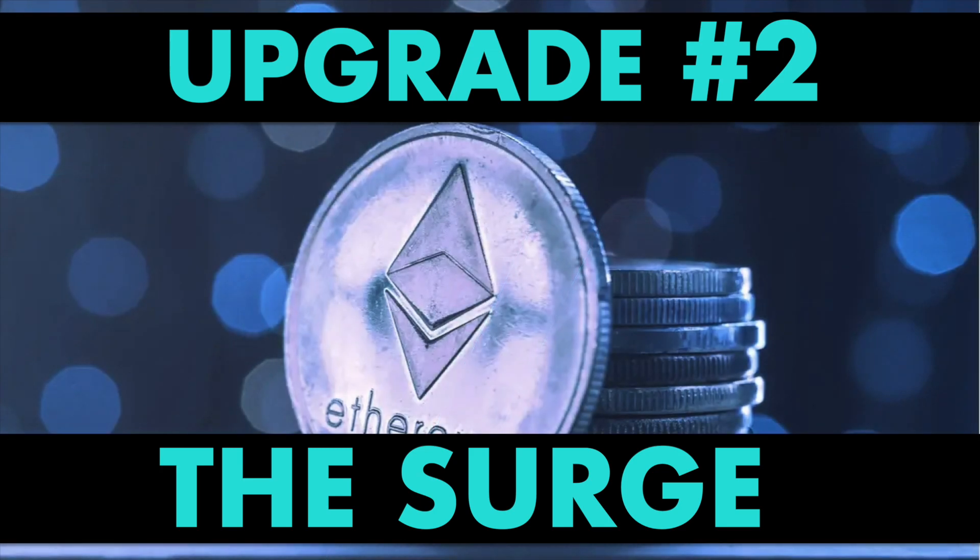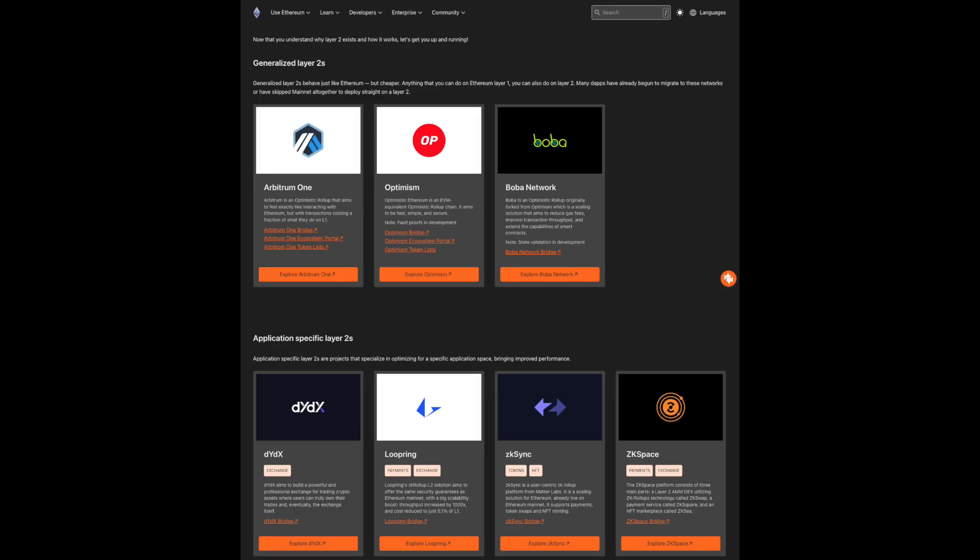Next on the list, we have The Surge. This is the update that will greatly increase scalability on Layer 2 rollups. These solutions, like Optimism, Immutable X, Arbitrum, and many more, do all of their computations and storage off-chain, while posting data back to Ethereum.